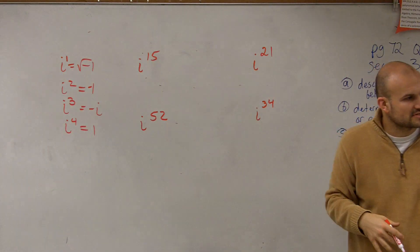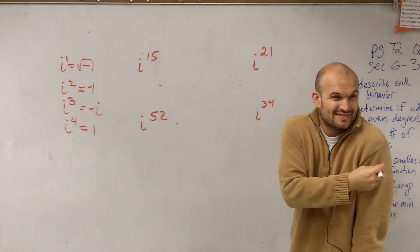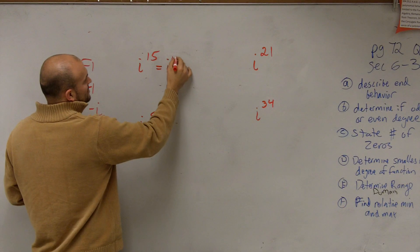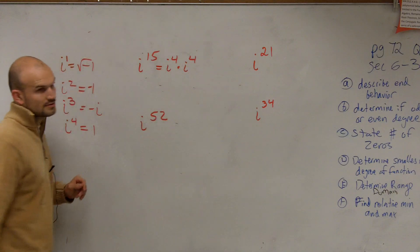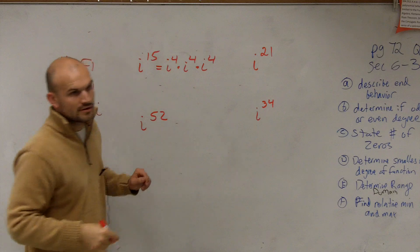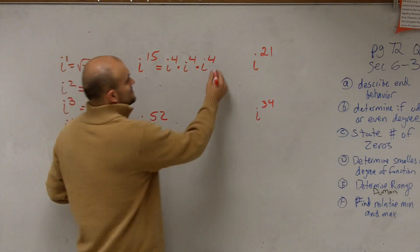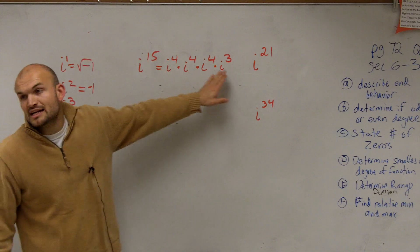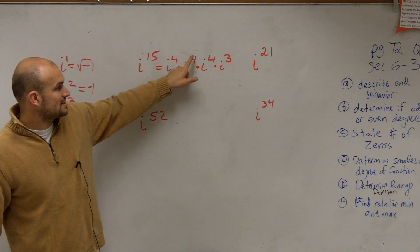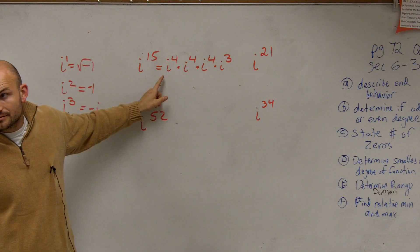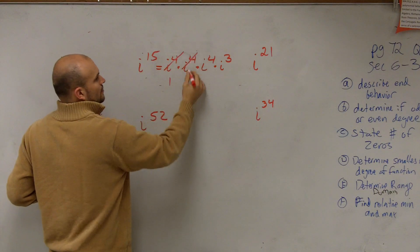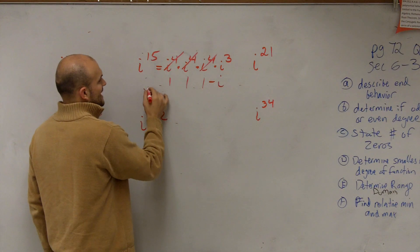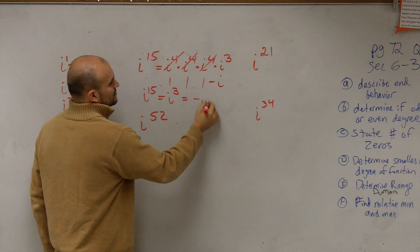Ladies and gentlemen, you could write out i to the fifteenth as many times as you want. You could write this as i to the fourth times i to the fourth times i to the fourth times i to the third — because when you multiply exponents, you add them. That gives you i to the fifteenth. i to the fourth is one, i to the fourth is one, i to the fourth is one, and i cubed is negative i. So i to the fifteenth equals i cubed, which equals negative i.